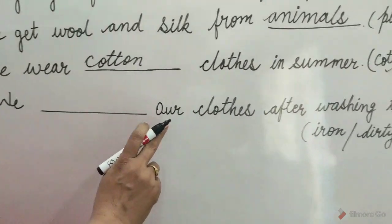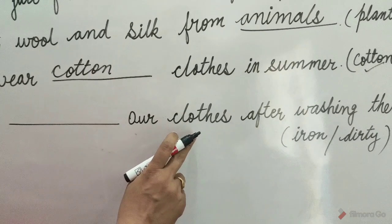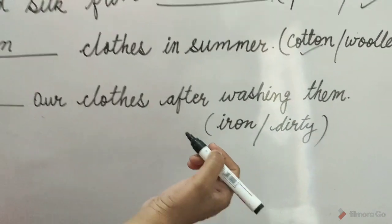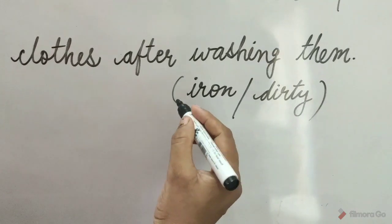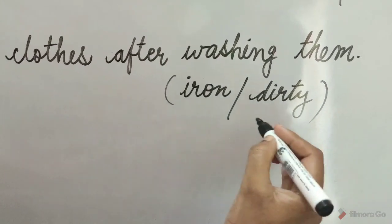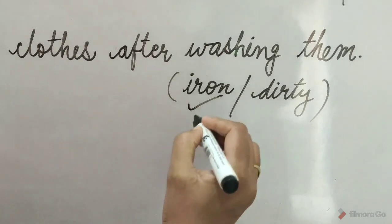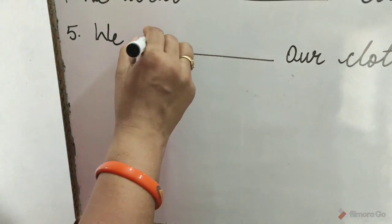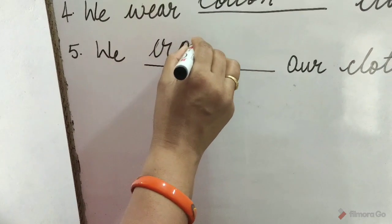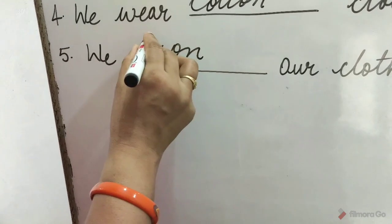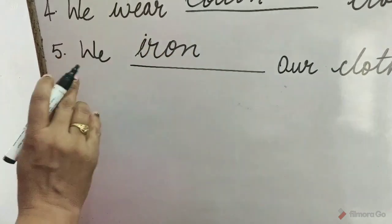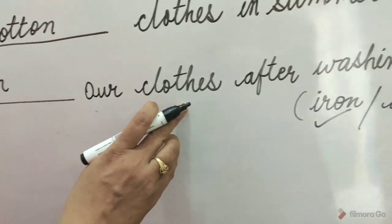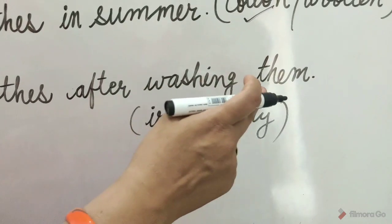5. We blank our clothes after washing them. The options are iron and dirty. Iron is the correct option. We iron our clothes after washing them.